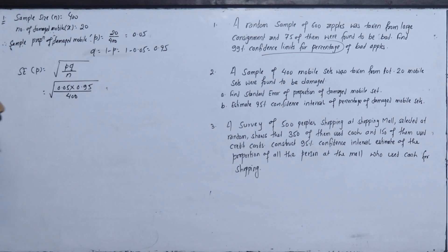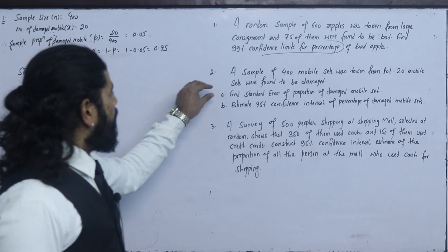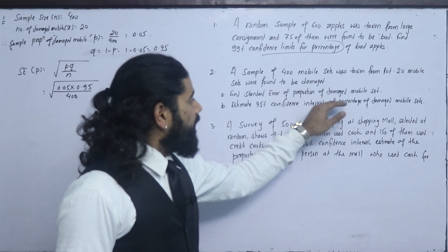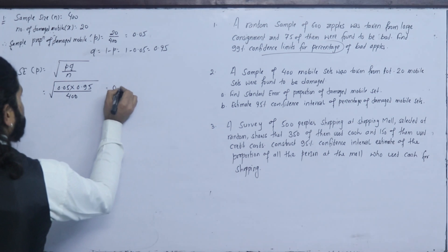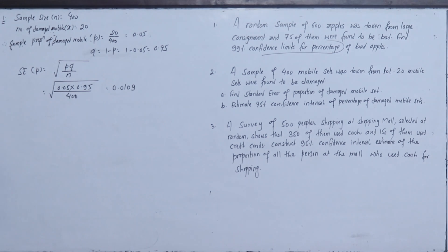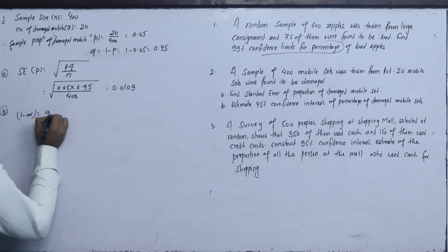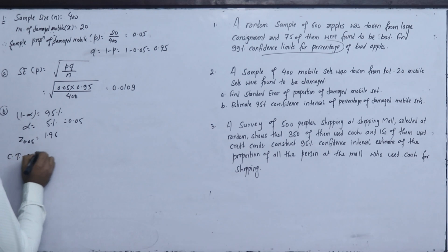Standard error is square root of p times q over n - 0.05 times 0.95 over 400, which equals 0.0109. The confidence interval is proportion plus minus z alpha times standard error about proportion.